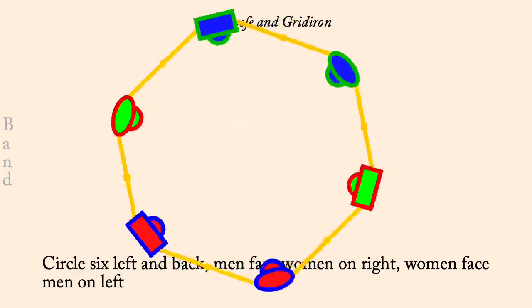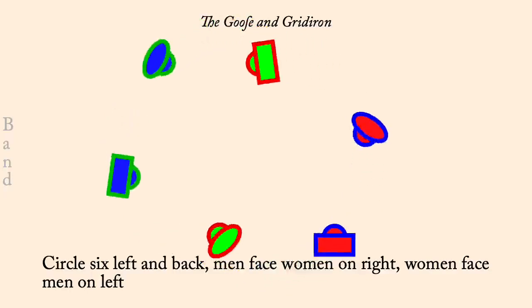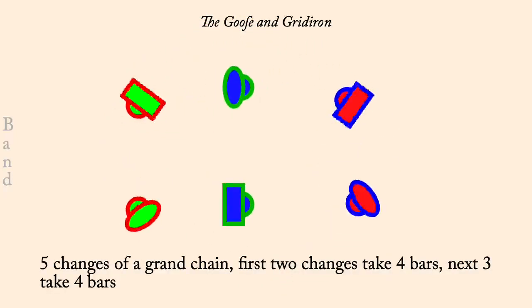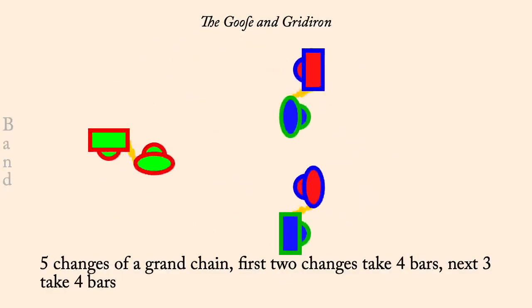Twos face down, ones up, threes across — five changes of a grand chain for six.